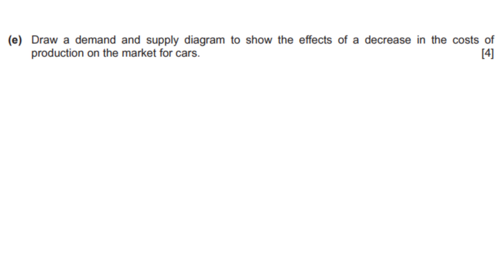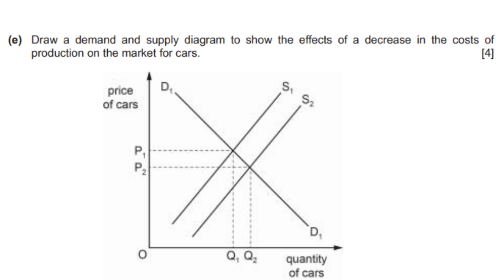Let's have a look at a past paper question on demand and supply diagrams. It says: draw a demand and supply diagram to show the effects of a decrease in the cost of production on the market for cars. We need to include both the demand and supply curves. A decrease in the cost of production means an increase in supply because firms will have more profit, hence there will be a shift to the right. Label the axes for one mark, draw and label both curves, show the supply curve shifting to the right, and draw the new equilibrium to get all four marks.